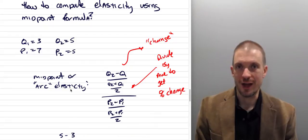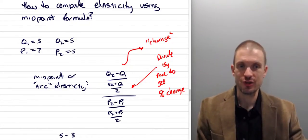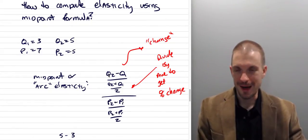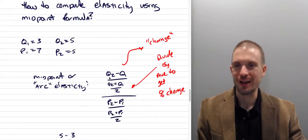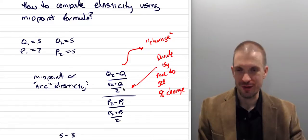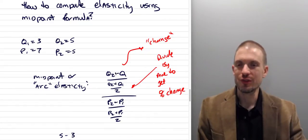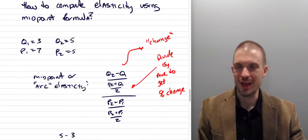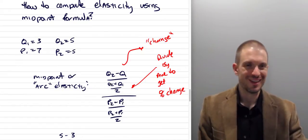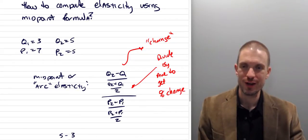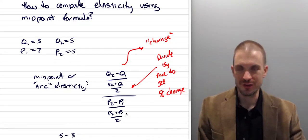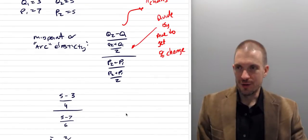The price elasticity of demand is the percentage change in quantity divided by the percentage change in price. The midpoint formula takes Q2 minus Q1 divided by the average quantity — that is, Q2 plus Q1 over two — so we get a percentage change relative to the average rather than the starting point. Similarly, we take the change in price divided by the average price: P2 plus P1 over two.